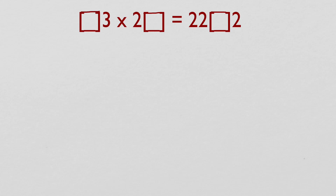Let's make it harder — slightly bigger numbers and two unknowns to find. As always, start with the units column: 3 times something equals a number ending in 2. Going through the 3 times table, 3 × 4 = 12, and that is the only one. So that number has to be 4.